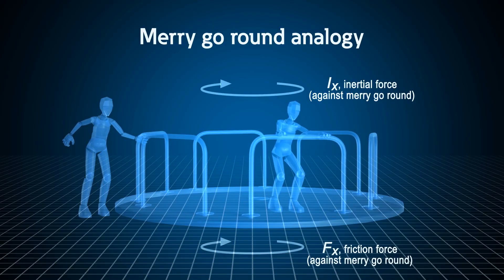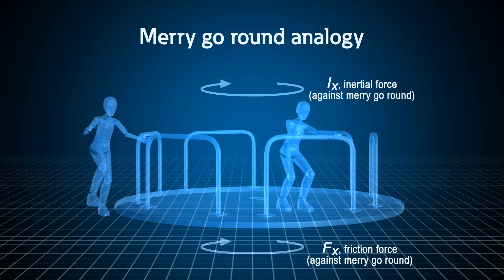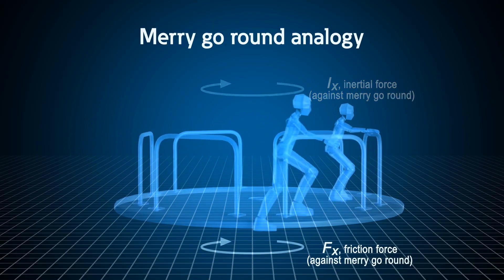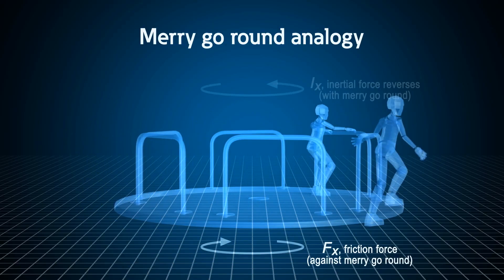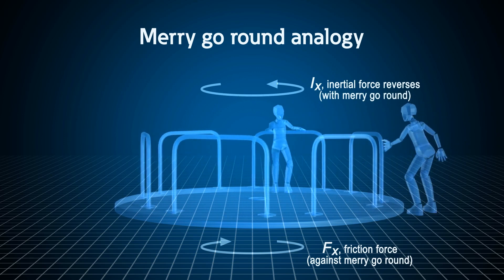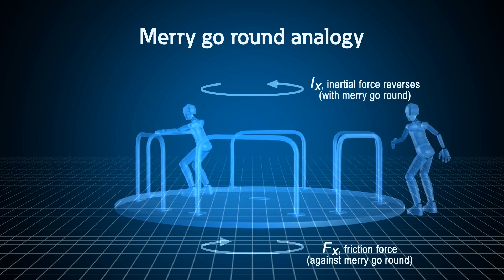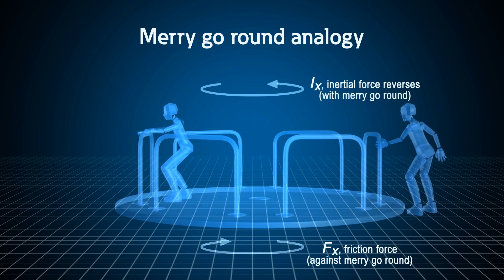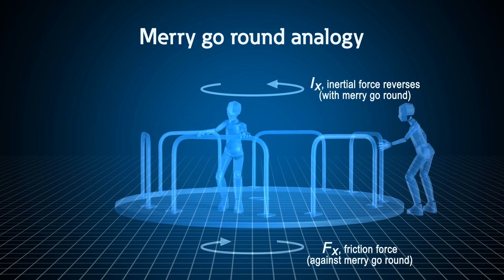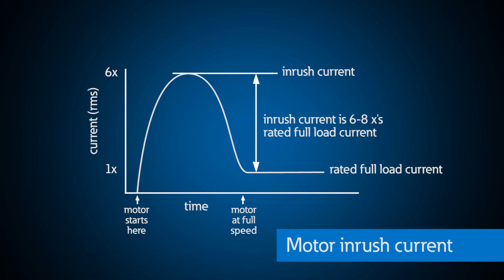This is like spinning someone on a merry-go-round — it's hard to get them spinning. You might even run around in a circle a few times while pulling on the bar. But once they're up to speed, it's easy to keep them moving by pushing on one of the bars as it goes by. A typical motor inrush current when started across the line, meaning directly connected to the 60 Hz power system, is six to eight times the rated full load current.